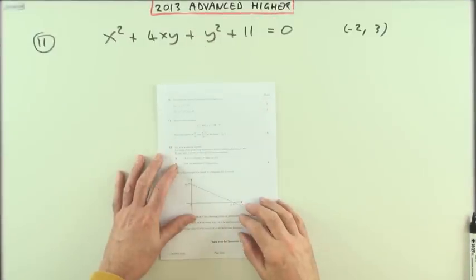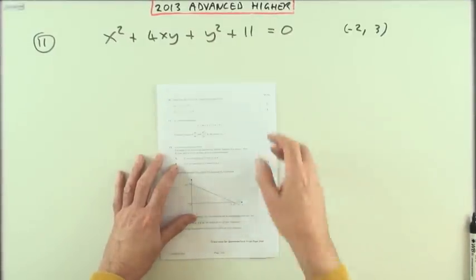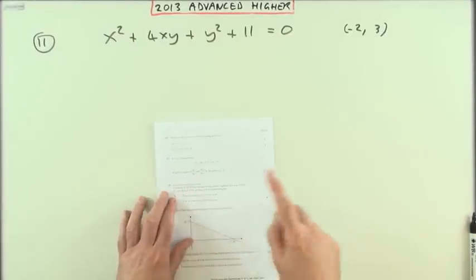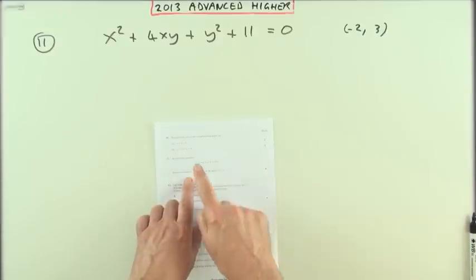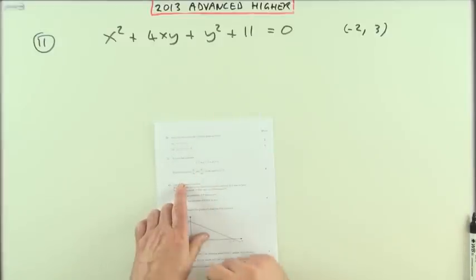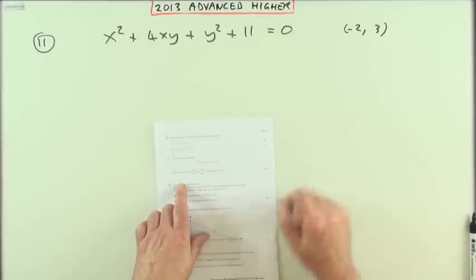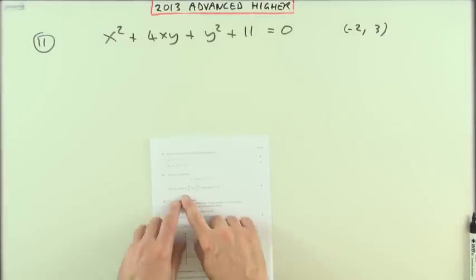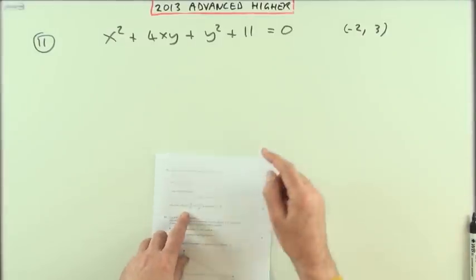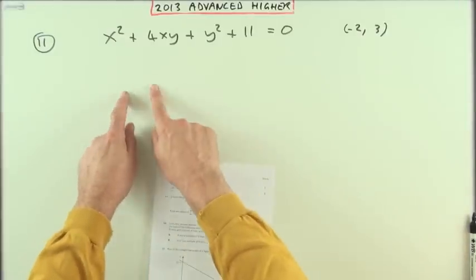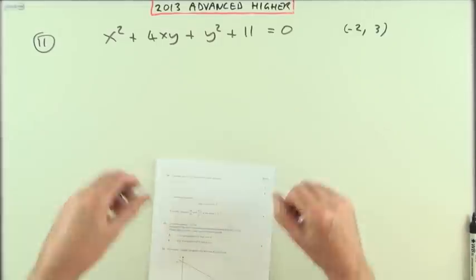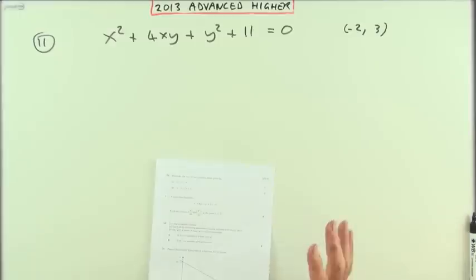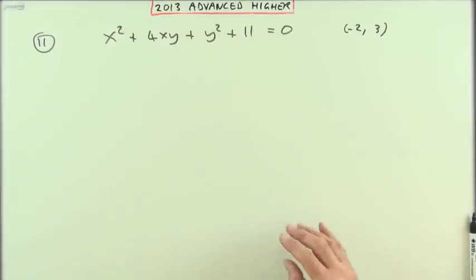Number 11 from the 2013 Advanced Higher Maths — an implicit equation where you've defined the values of the first and second derivative at a specific point. That would seem to imply that you don't need to find the first or second derivative in formula form — simply evaluate it.